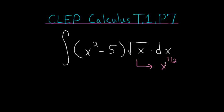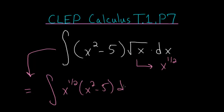By doing this, we can then distribute this x to the one-half to each of these terms. So this integral is equal to the integral of x to the one-half times x squared minus 5 dx. Now we'll distribute this x to the one-half to each of these terms in this expression in parentheses.